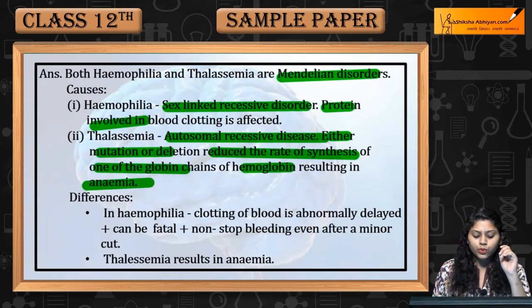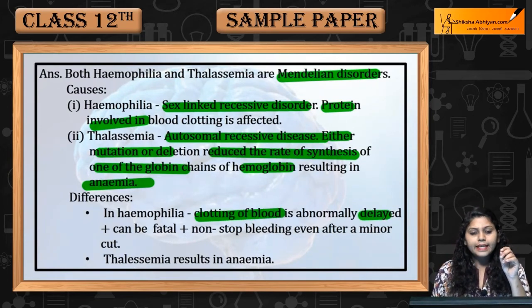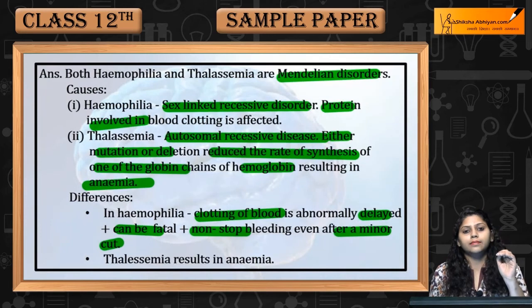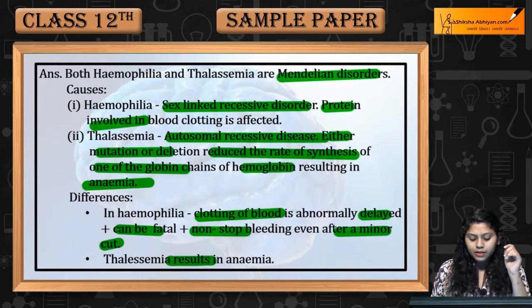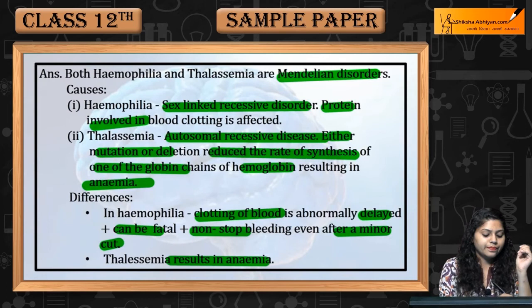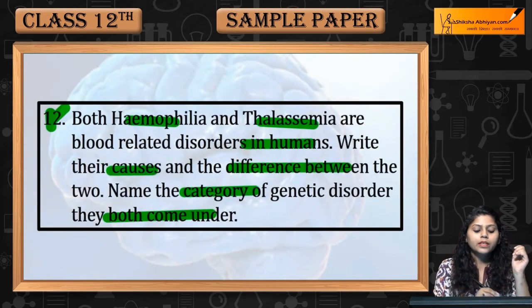The difference between the two: in hemophilia, clotting of blood is abnormal — it can be fatal, with non-stop bleeding even after a minor cut. Thalassemia results in anemia. This was question number 12.